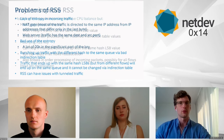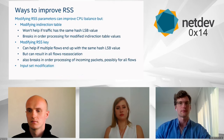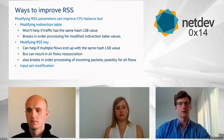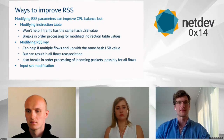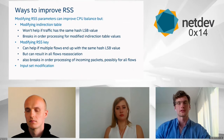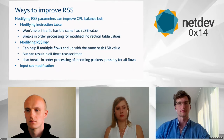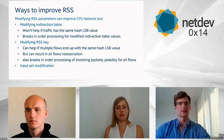We have a few options to improve RSS. We can modify the indirection table to split and balance traffic somewhat. This won't help if traffic shares the same lower hash bits, because we can't split those flows individually — we'd move all of them and break in-order processing for the modified indirection table values.